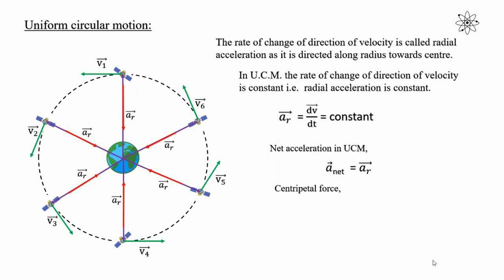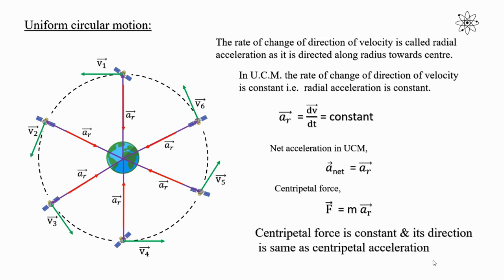This radial acceleration gives centripetal force. The formula for that is: F is equal to mass times radial acceleration. Centripetal force is constant and its direction is the same as that of centripetal acceleration. As the direction of centripetal acceleration and centripetal force are the same, the force direction is along the radius towards the center.